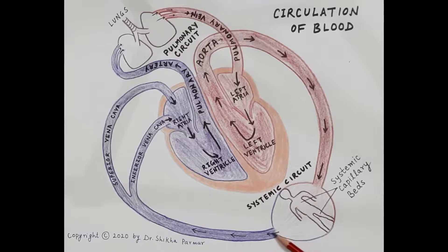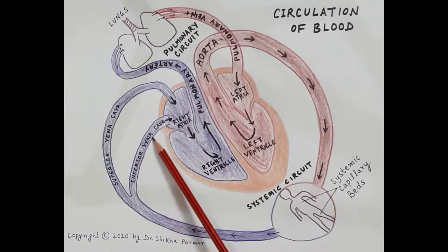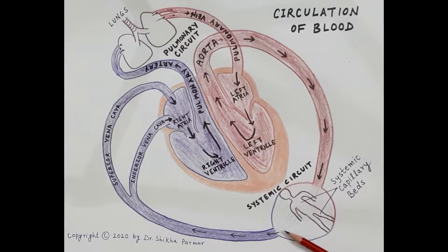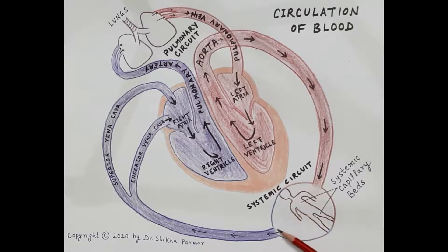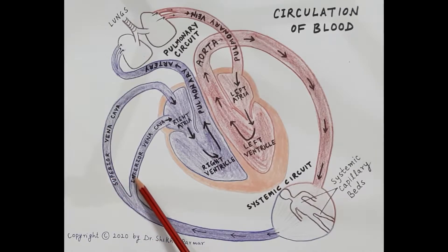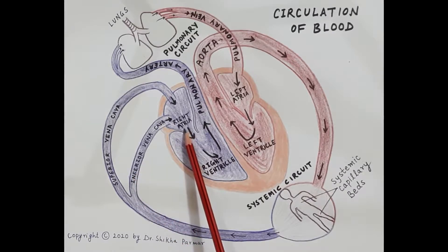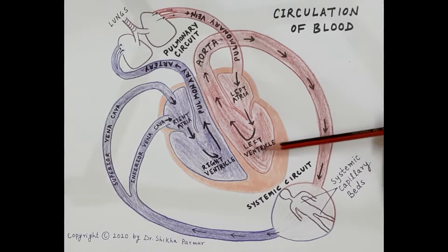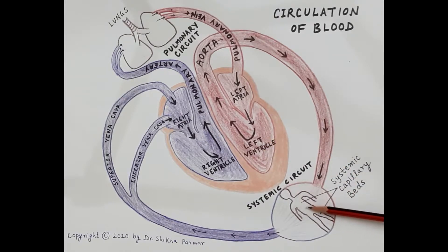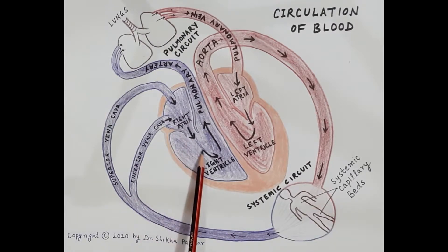This deoxygenated blood is carried from the lower part of the body by the inferior vena cava, and from the upper part of the body by the superior vena cava. The superior vena cava and inferior vena cava bring deoxygenated blood from the upper and lower parts of the body respectively back to the right atria. This circulation of oxygenated blood from the heart to the body, and the circulation of deoxygenated blood from the body back to the heart, is termed as the systemic circulation.